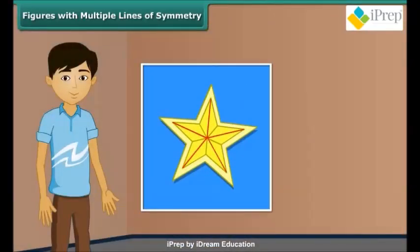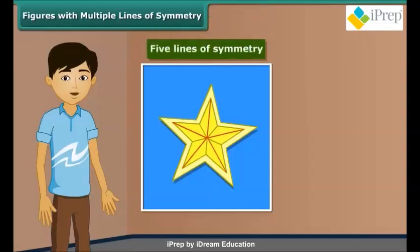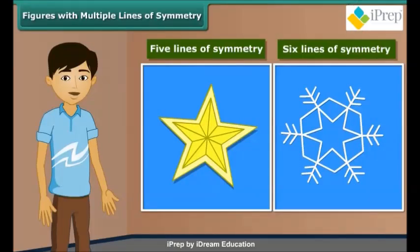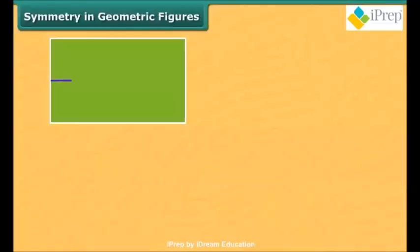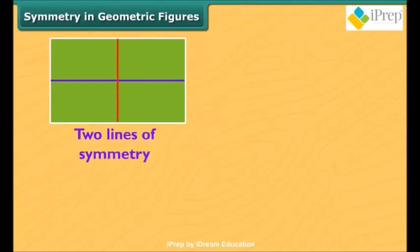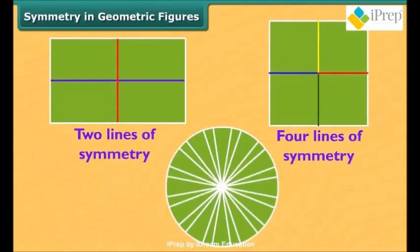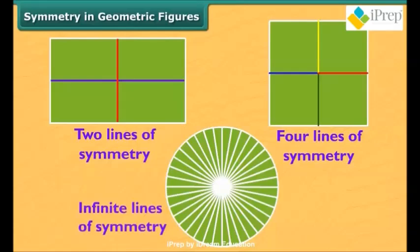Children, look at this beautiful star — it has five lines of symmetry. What about this pattern? It has six lines of symmetry. Rectangles have two lines of symmetry, but a square has four. A circle has infinite lines of symmetry.